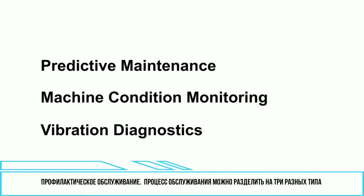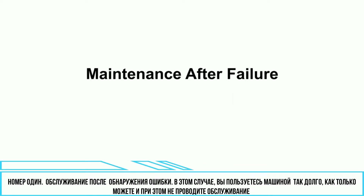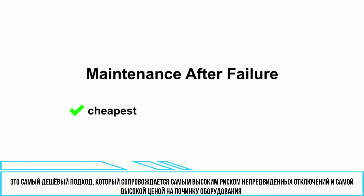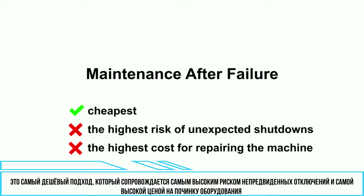Predictive maintenance. We can simplify the maintenance process as three different types. The first is maintenance after failure — you simply use the machine as long as possible without any maintenance. It is the cheapest approach but with the highest risk of unexpected shutdowns and the highest cost for repairing the machine.